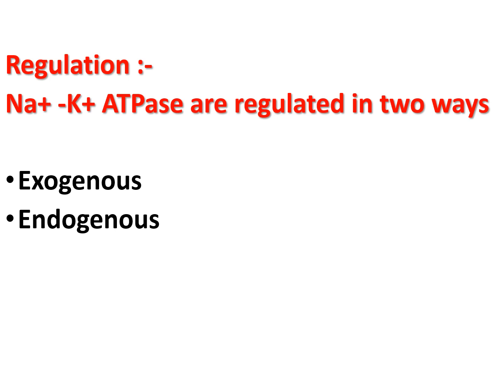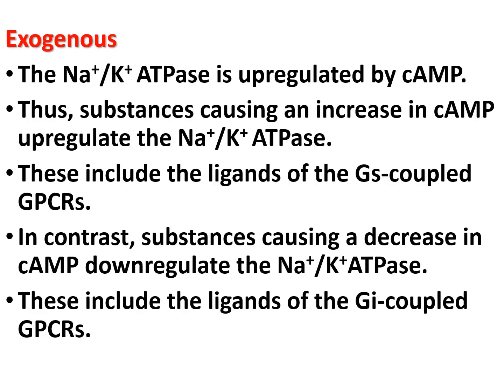Sodium-potassium ATPase is regulated in two ways: exogenous and endogenous. Exogenously, it is upregulated by cyclic AMP; thus substances that increase cyclic AMP upregulate the sodium-potassium ATPase. This includes ligands of Gs-coupled G protein-coupled receptors.